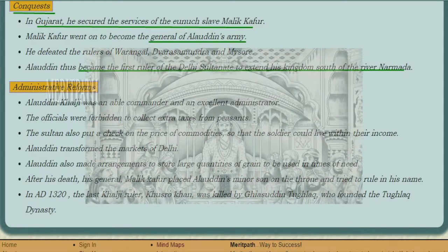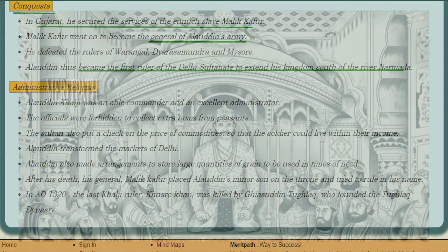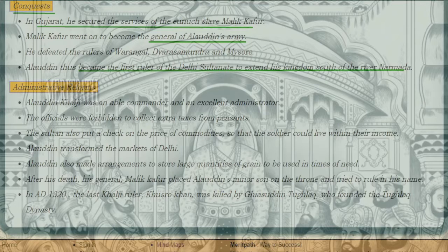What were the conquests of Alauddin Khalji? In Gujarat, he secured the services of the slave Malik Kafur, who became the general of Alauddin's army. He also defeated the rulers of Warangal, Dwarasamudra, and Mysore from South India.